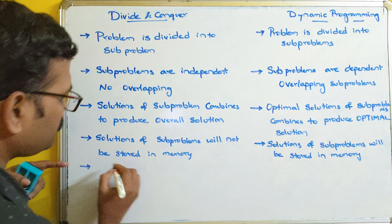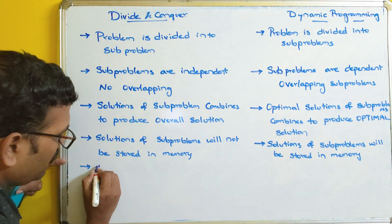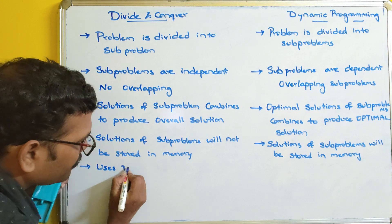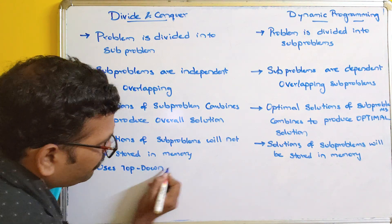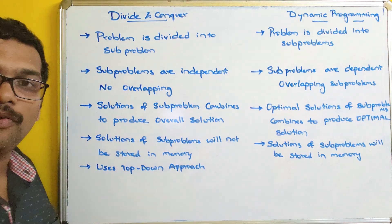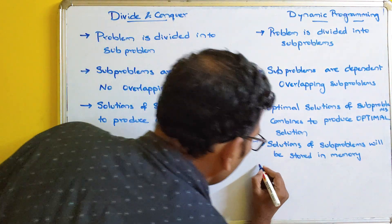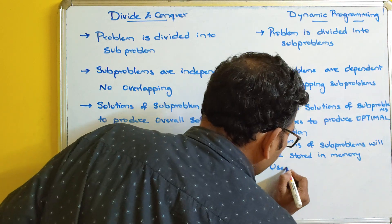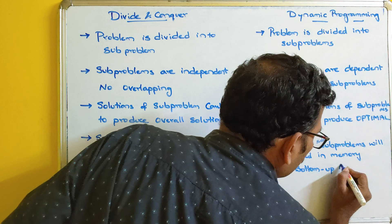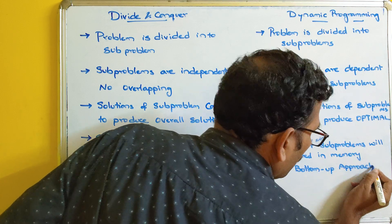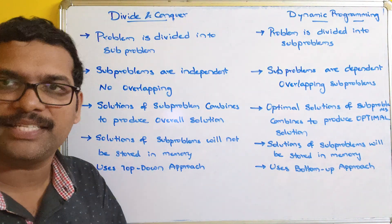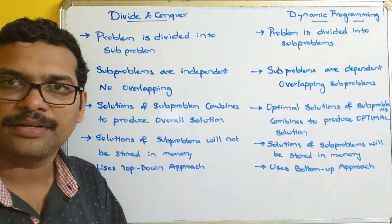Divide and conquer uses a top-down approach. Dynamic programming mainly uses a bottom-up approach. This process of storing and reusing solutions in dynamic programming is called memoization.